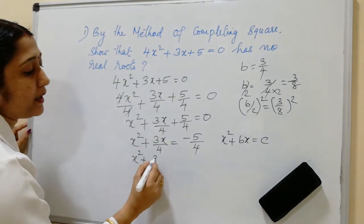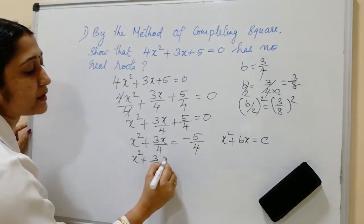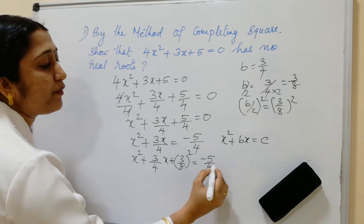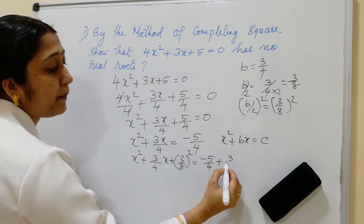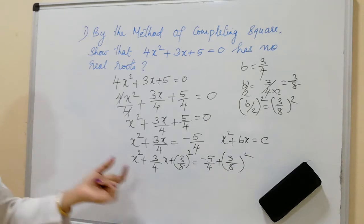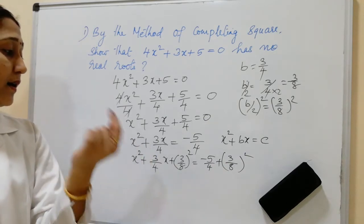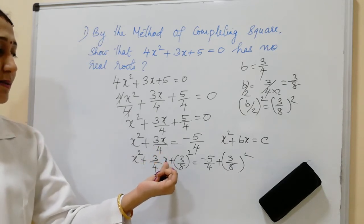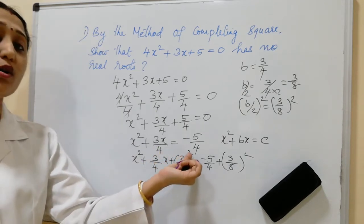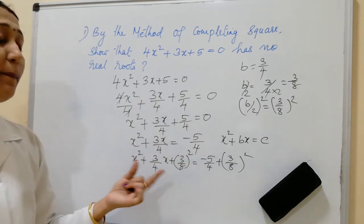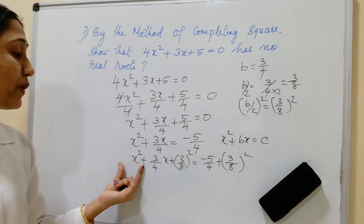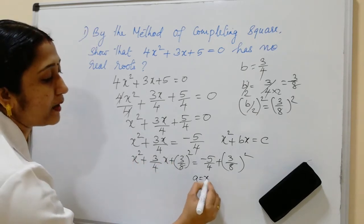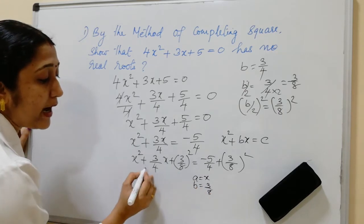So we have: x² + (3/4)x + (3/8)² = −5/4 + (3/8)². Now look at the left side of this equation: x² + (3/4)x + (3/8)². This becomes a perfect square of the form A² + 2AB + B², where A = x and B = 3/8.